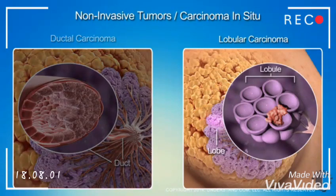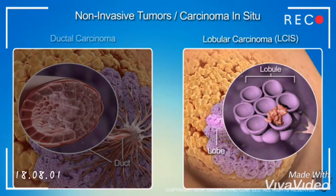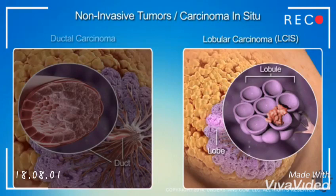Lobular carcinoma in situ is often referred to as LCIS, or lobular neoplasia. Although LCIS has the word carcinoma in it, it has a low risk of progressing to invasive disease. It is commonly thought of as a risk factor for developing breast cancer.